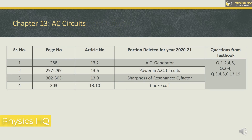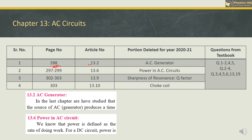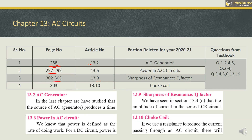For AC Circuits, section 13.2 — AC generator — on page 288 is deleted. Power in AC circuits on pages 297 and 299, sharpness of resonance on pages 302-303, and choke coil — article 13.10 — are also deleted. You can skip MCQs 2, 3, and 4. Question number 2 short answer in brief, question number 4, and questions 3, 4, 5, 6, 13, and 19 can be skipped for the board exam.